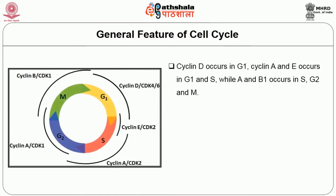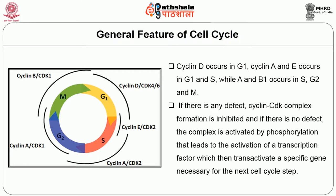The expression timings of cyclins vary in different parts of the cell cycle. For example, cyclin D occurs in G1 phase; cyclin A and E occur in G1 and S phase, while cyclin A and B1 occur in S, G2 and M phases. If there is any defect, cyclin-CDK complex formation is inhibited. If there is no defect, the complex is activated by phosphorylation, leading to activation of a transcription factor which then transactivates specific genes necessary for the next cycle step.